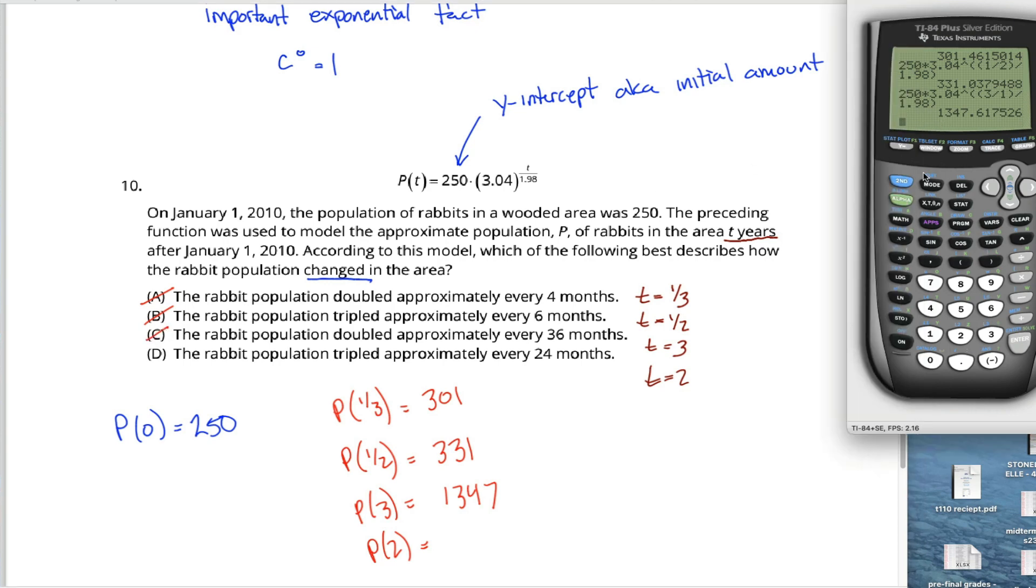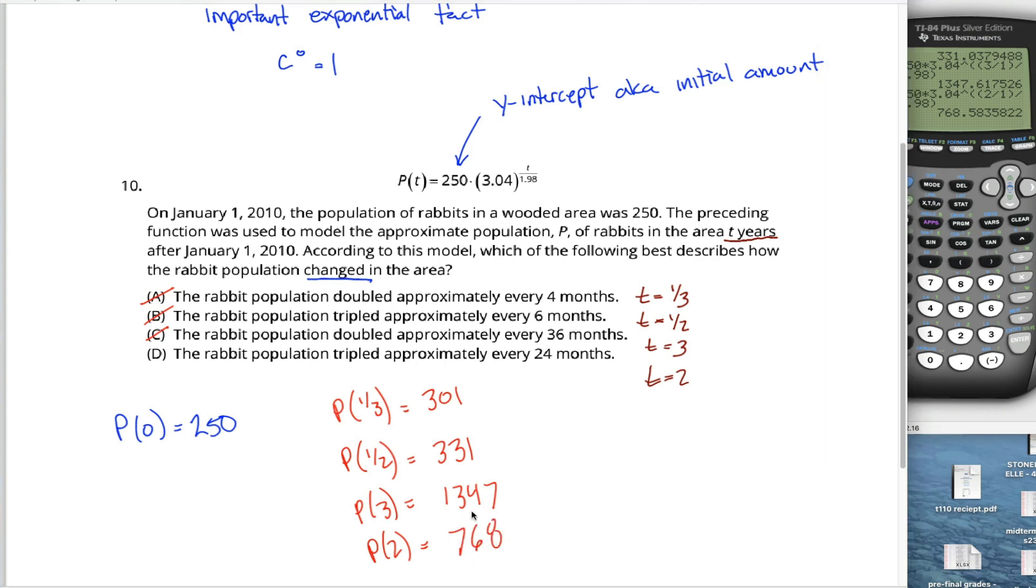So this ain't my answer either. I bet it's going to end up being D. Let's make sure that works. Second, enter, pull up the most recent entry. Instead of 3 over 1, let's make it 2 over 1. Hit enter, and we get a number pretty close to 750. Why is it relevant that it's close to 750? Because part D says it triples every 24 months. 3 times 250 is 750. This sure looks like the right answer. And that's a fairly quick way you could get that answer.